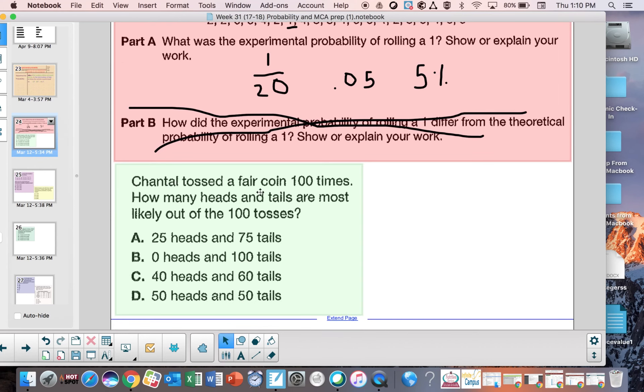So for this one, Chantel tossed a fair coin, so a coin, thinking heads or tails, typical coin, a hundred times. How many heads and tails are most likely out of the hundred tosses? They didn't give us the results of anything that happened. They're just asking us how many heads and tails are most likely. If you think of your theoretical probability, it would be one half, or 50% chance to get a heads or a tails. So if I flip a coin a hundred times, I would expect something close to be 50-50, 50 heads and 50 tails. If I do an experiment, I might not get exactly that for sure, but I would expect it to be close to 50 heads and 50 tails because the theoretical probability is one half.